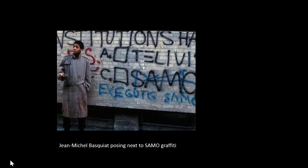As SAMO, Basquiat and Diaz wrote maxims, jokes, and prophecies in marker and spray paint on subway trains throughout New York City, particularly the D train, which ran between downtown Manhattan and Basquiat's home in Brooklyn, as well as on the walls and sidewalks of SoHo and Tribeca. Many SAMO writings were found near prominent art galleries. Phrases like 'SAMO as an end to playing art' or 'SAMO for the so-called avant-garde' presented the SAMO persona as outside the commercial art world and critical of it. Even after relinquishing SAMO and emerging as Jean-Michel Basquiat, the artist remained an outsider to the mainstream art world despite his very successful rise on the art auction block.